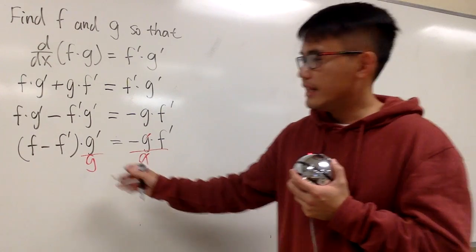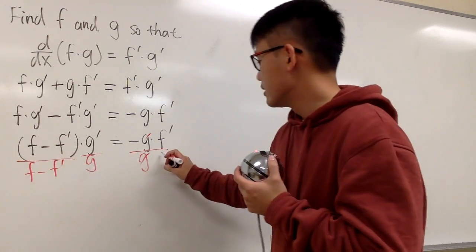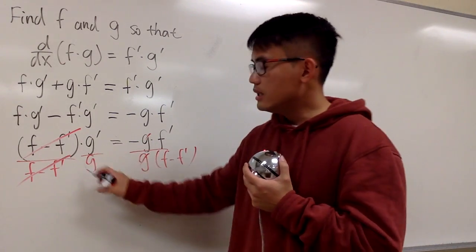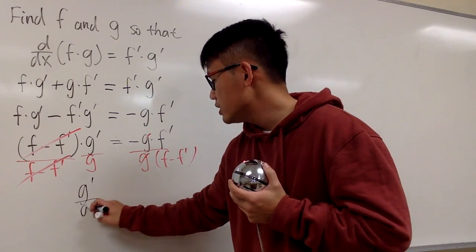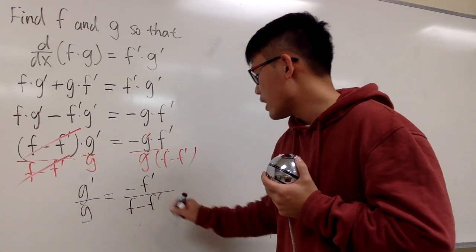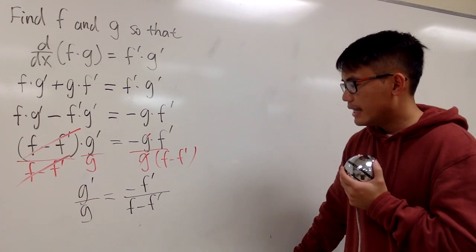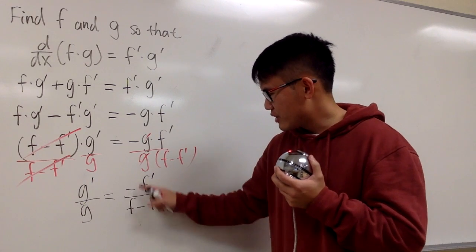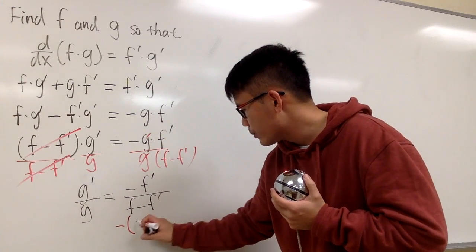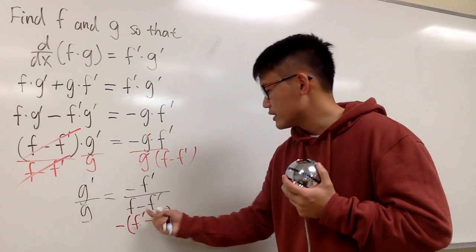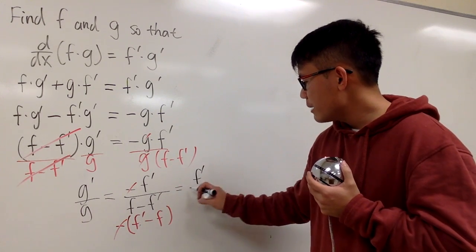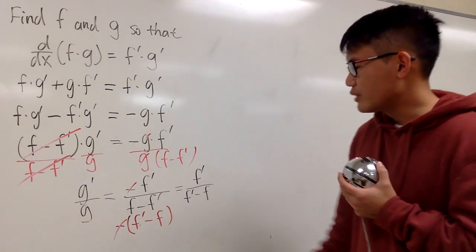Now let's collect the g's and the f's together. I'll divide both sides by g so those cancel, and divide both sides by (f minus f prime) so those cancel too. The left hand side becomes g prime over g, equal to negative f prime over (f minus f prime) on the right. I can switch the order of subtraction in the denominator and negate it, turning this into the positive form: f prime over (f prime minus f).